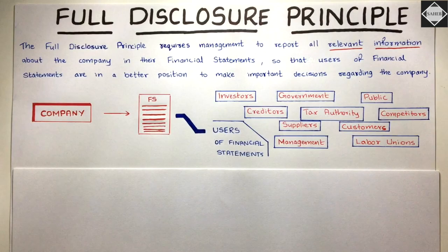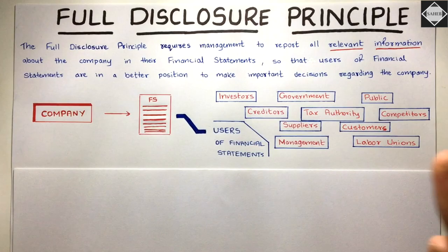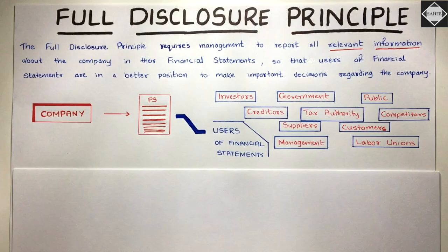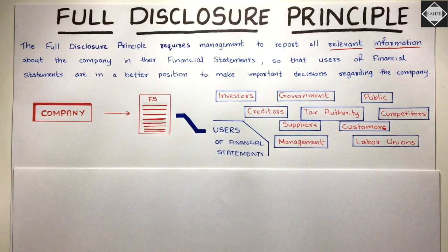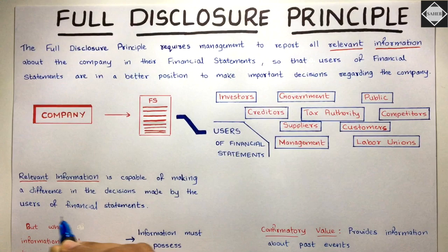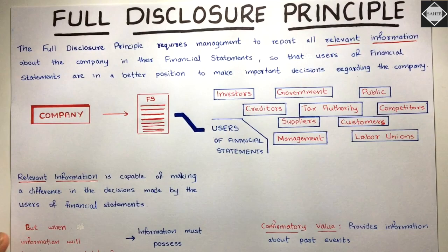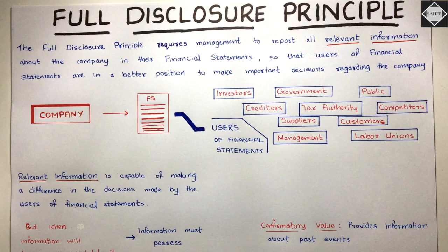Now the main question is: is all information disclosed in financial statements? No — only relevant information. What is relevant information? Information is relevant when it is capable of making a difference in the decisions made by the users of financial statements. For example, an investor had decided to invest in a company, but after reading page two of the financial statement he found information that changed his mind.